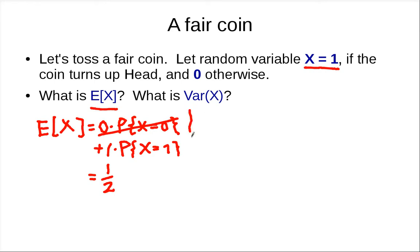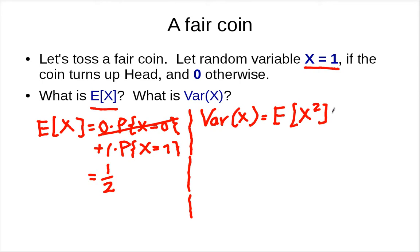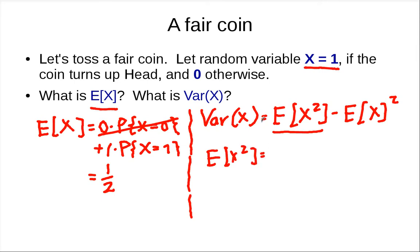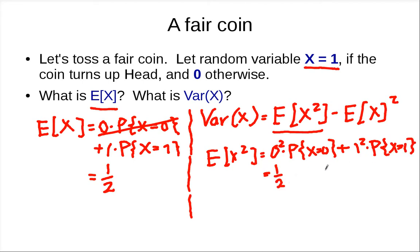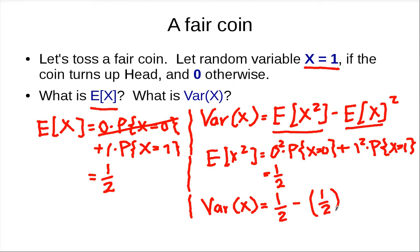Now what's the variance of x? We can use the definition of variance: expected value of x squared minus the square of the expectation. The expected value of x squared is 0 squared times the probability x equals 0, plus 1 squared times the probability x equals 1, which gives 1/2. Plugging in, the variance of x is 1/2 minus (1/2) squared, which is 1/2 minus 1/4, giving us 1/4.